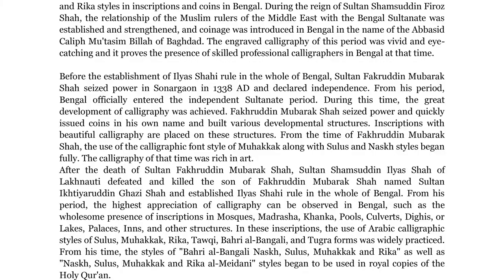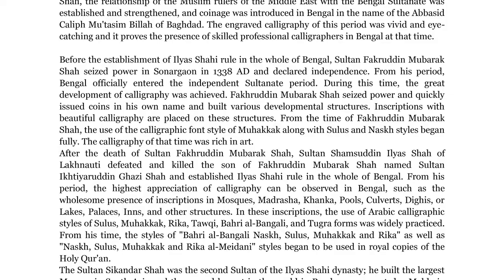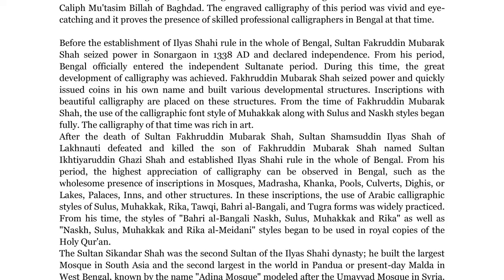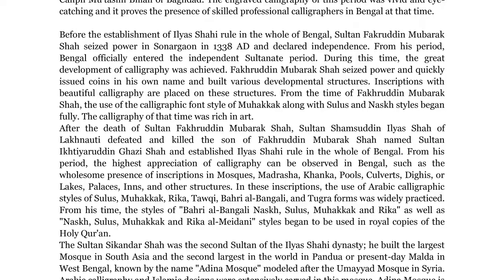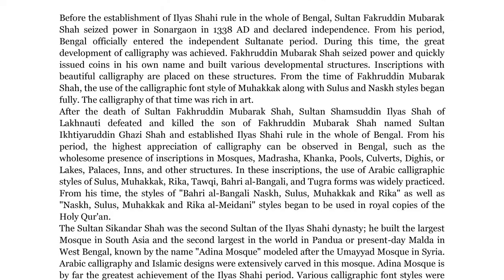The calligraphy of that time was rich in art. After the death of Sultan Fakruddin Mubarak Shah, Sultan Shamsuddin Ilyas Shah of Lakhnauti defeated and killed the son of Fakruddin Mubarak Shah, Sultan Iktiruddin Ghazi Shah, and established Ilyas Shahi rule in the whole of Bengal. From his period, the highest appreciation of calligraphy can be observed in Bengal, such as the wholesome presence of inscriptions in mosques, madrasha, kanka, pools, culverts, digas or lakes, palaces, inns, and other structures.